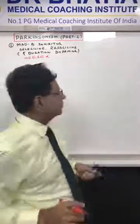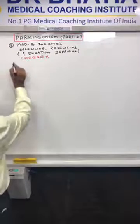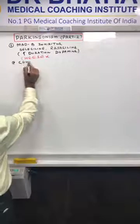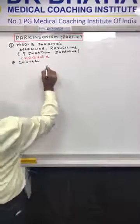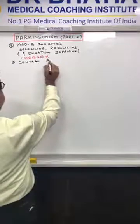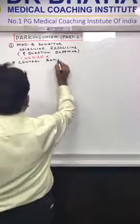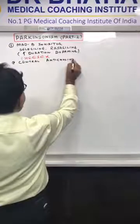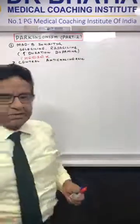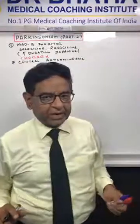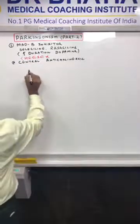The second group of drugs is centrally acting anticholinergics. An example of a centrally acting anticholinergic drug is benztropine.